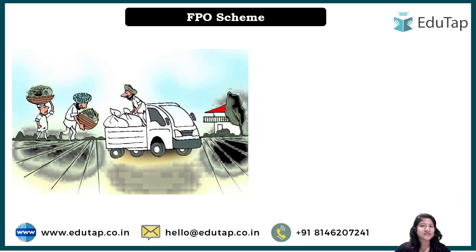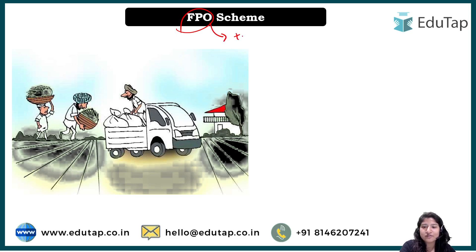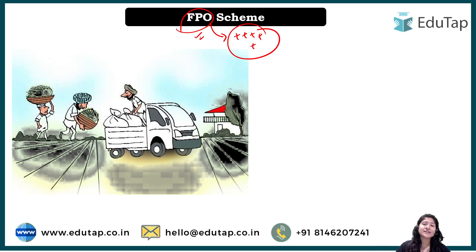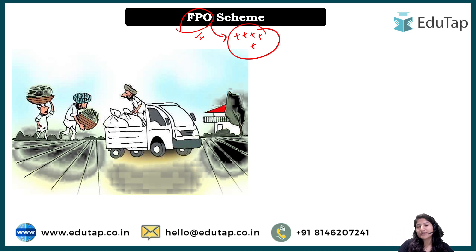Now let's talk about the scheme. First we will understand what is an FPO. An organization is formed when many people come together and form a group. Producers are those who produce something — for example, farmers who produce crops, people engaged in animal husbandry, fishermen, weavers, and handicraft workers — all are producers because they are producing something.